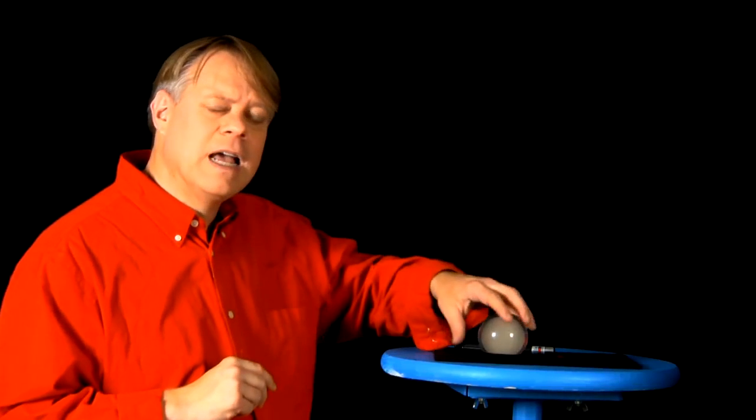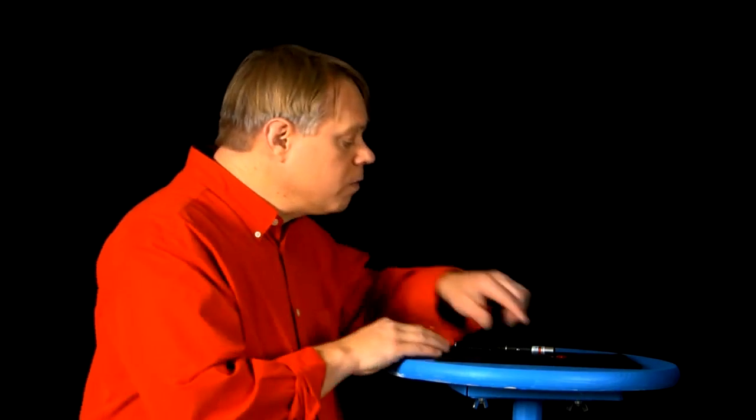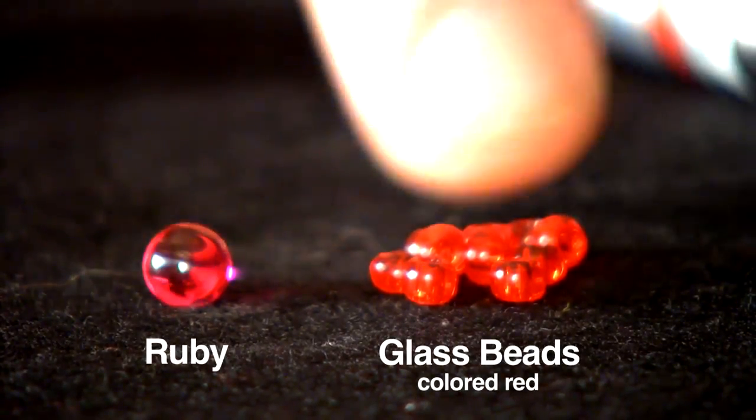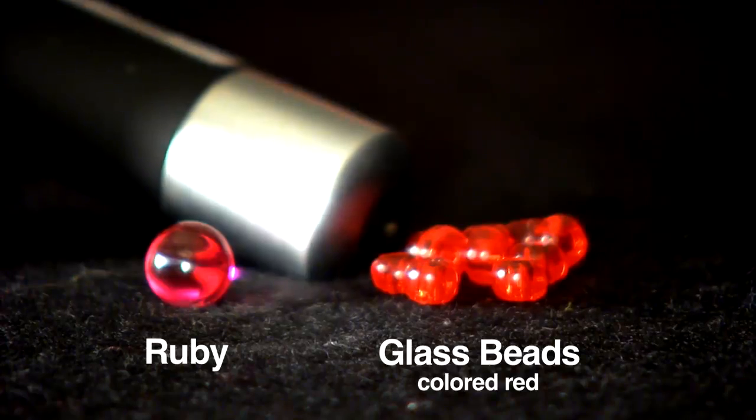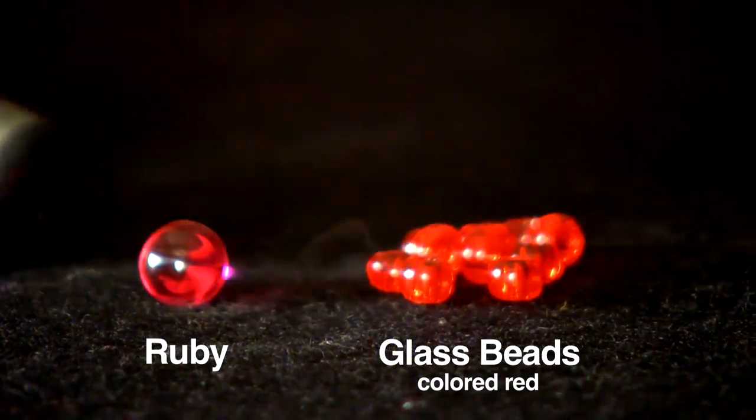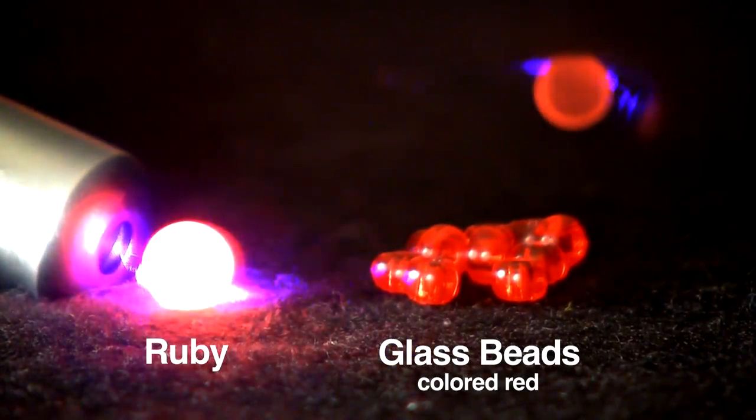Let me tell you about the engineering of the very first laser based on ruby. Here I have a tiny piece of ruby and some red colored glass beads. When I shine the blue light on the glass beads, nothing much happens, but shine it on the ruby and it glows red.